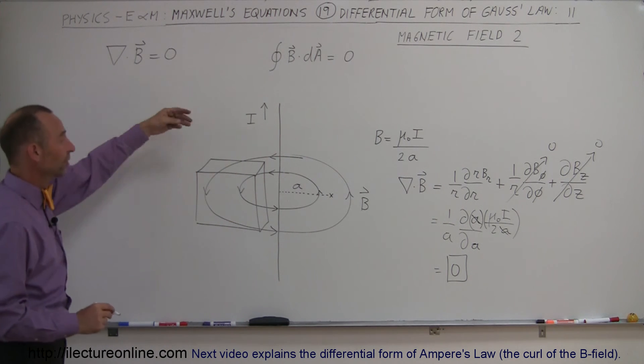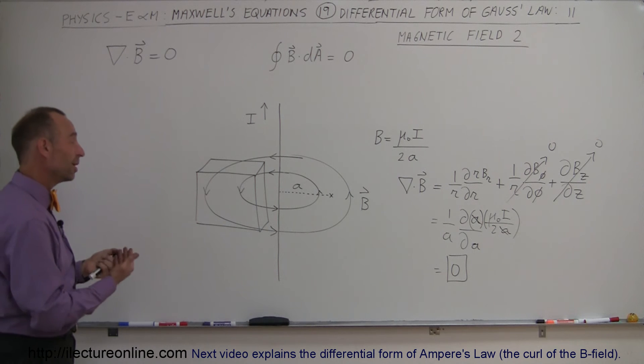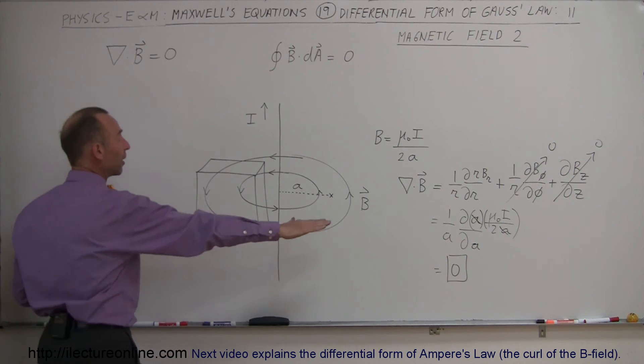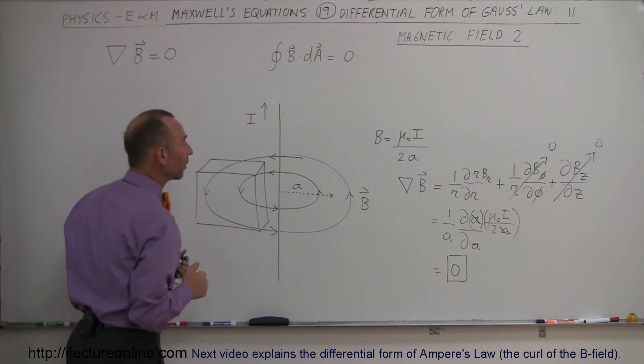The divergence of B field equals zero which proves out when we actually do the divergence. That means there's no point source causing a magnetic field to exist. It's the same everywhere as a function of radius around the wire.